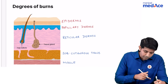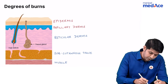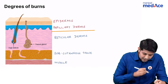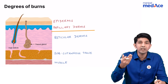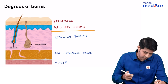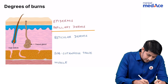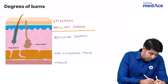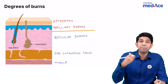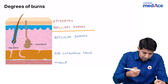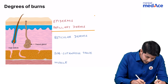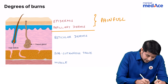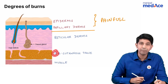Now, draw an imaginary line which divides the upper two layers and the lower three layers. You can see that there is the alphabet P — P is pain. So the burns which involve the first two layers are painful.